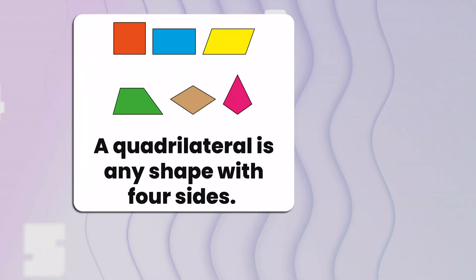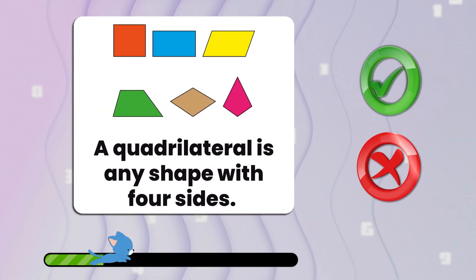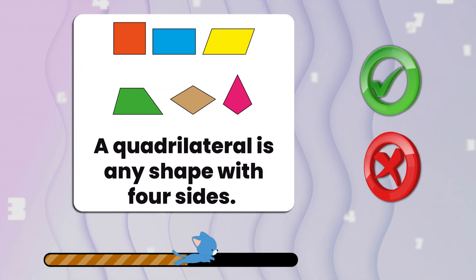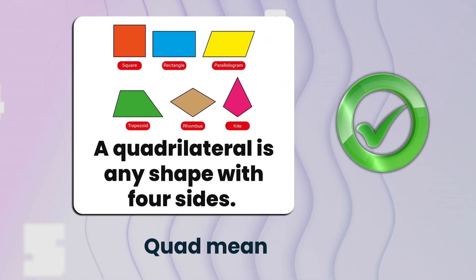Here's number one. A quadrilateral is any shape with four sides. True or false? That's true. Quad means four.